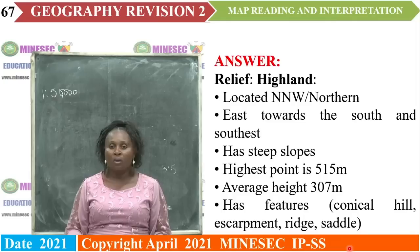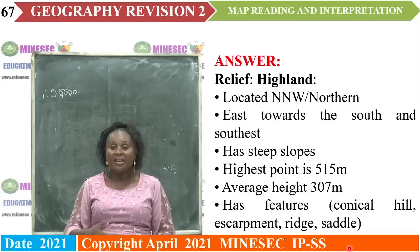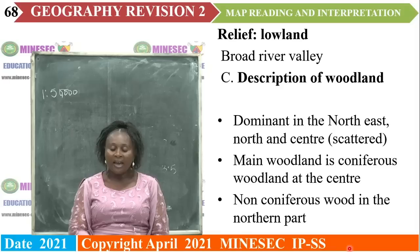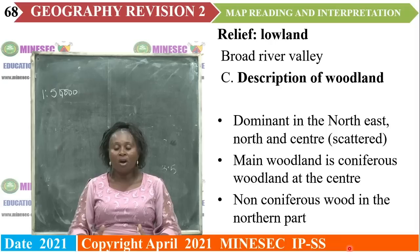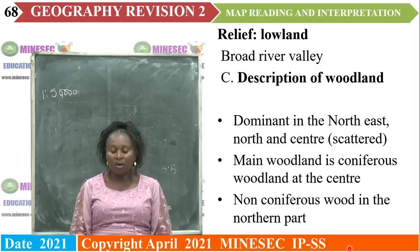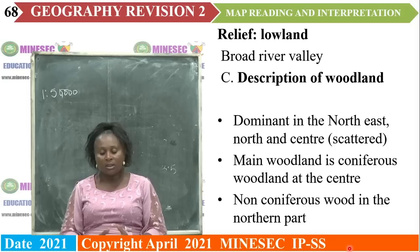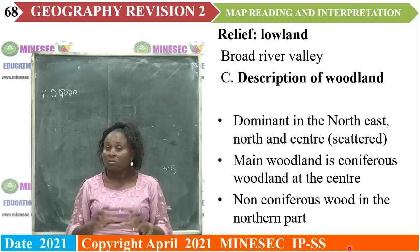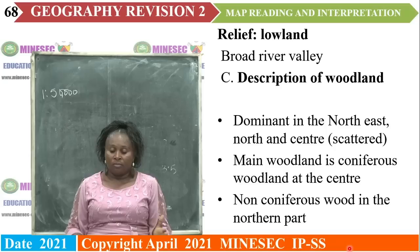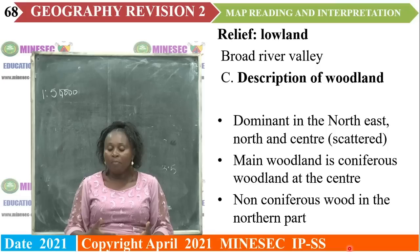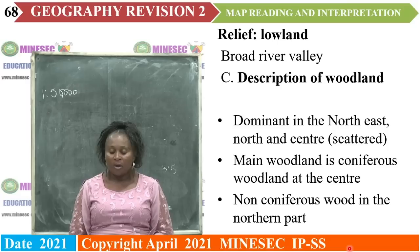The lowland on the map of Vermont is a broad valley — you can identify the features found in that broad valley. The woodland or forest is dominant to the northeast, north and center, meaning it does not cover the entire map — it is scattered. To the north you have woodland, to the center you have woodland, to the northeast you have woodland, and the main woodland is the coniferous forest found at the center. We also have non-coniferous woods in the northern part of the map.